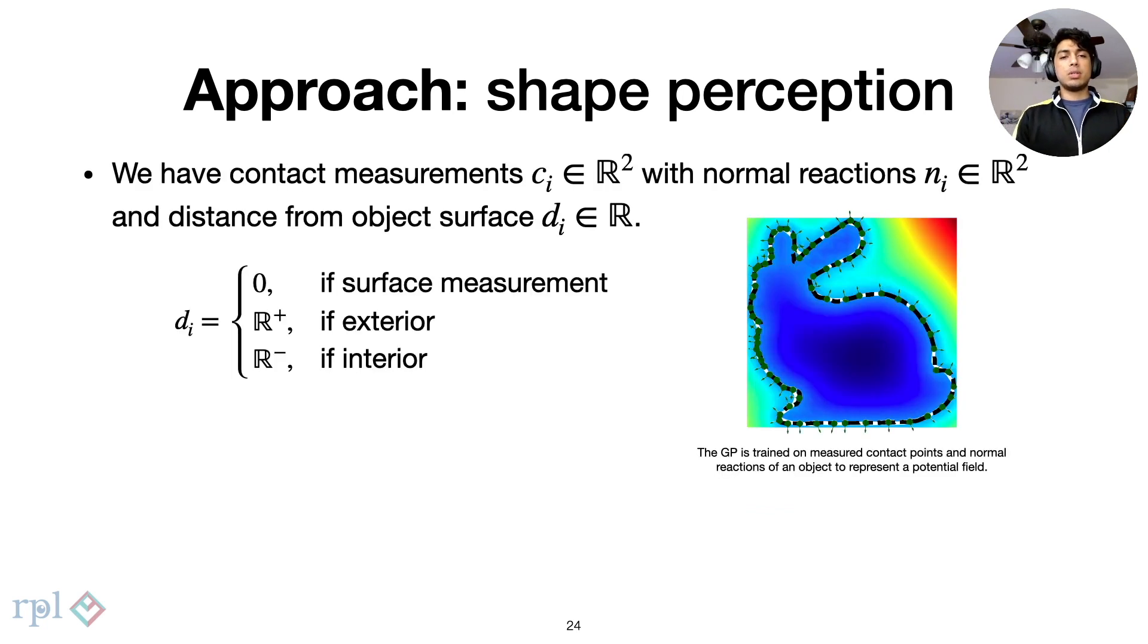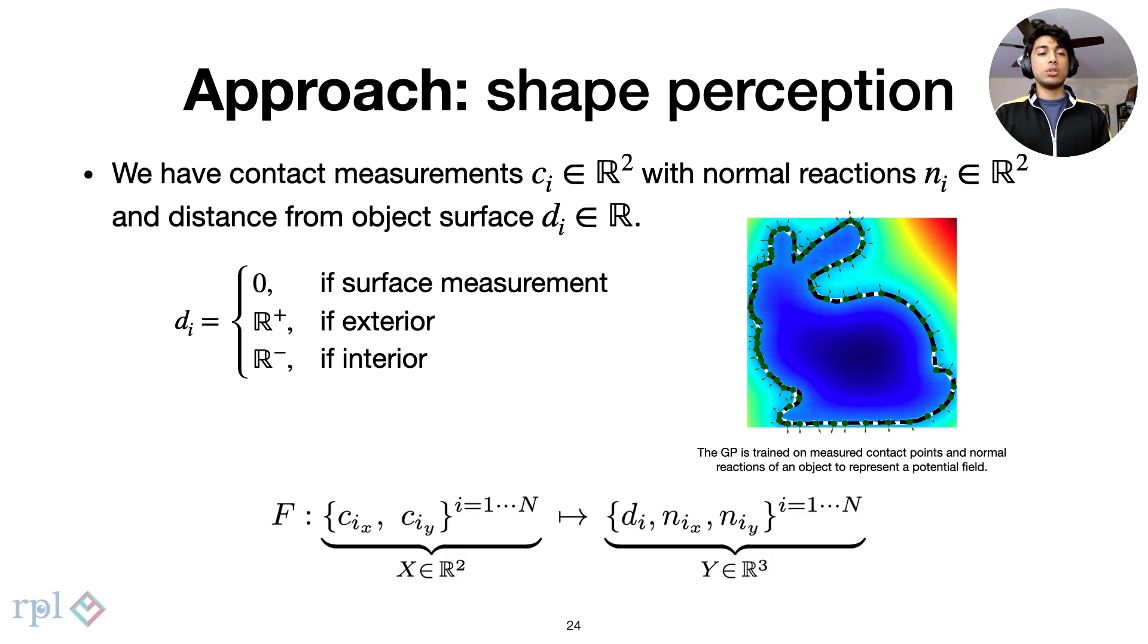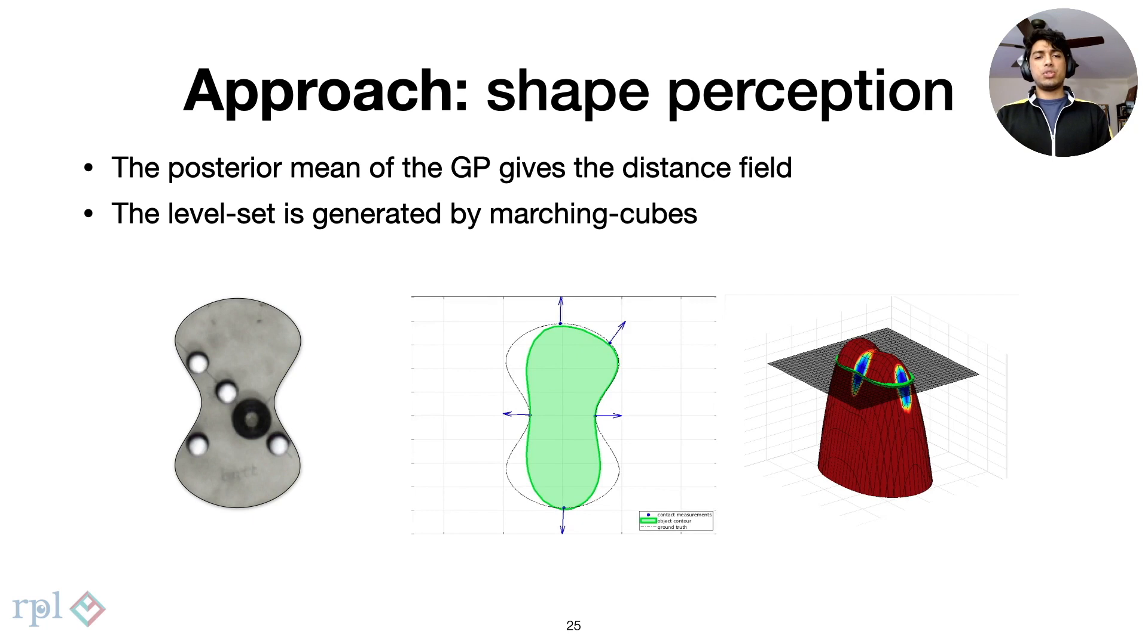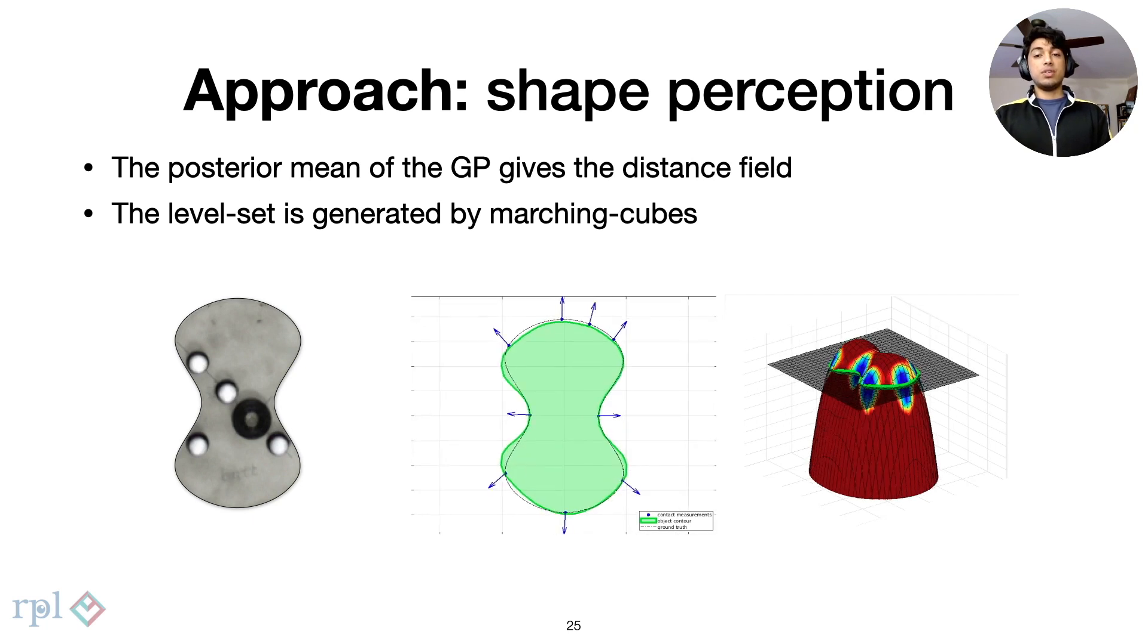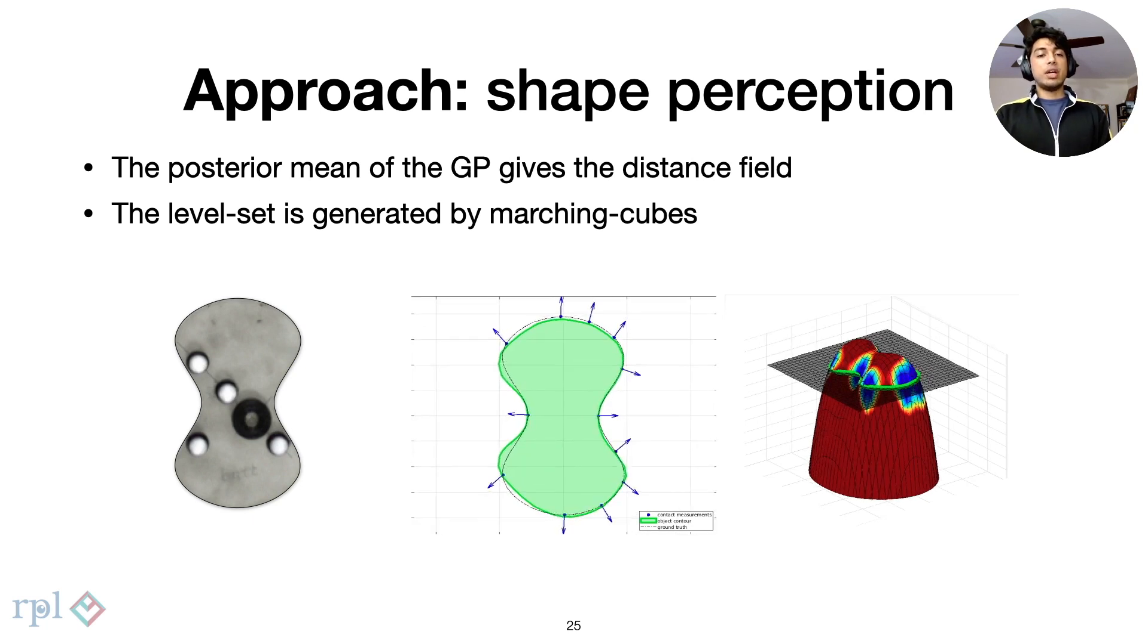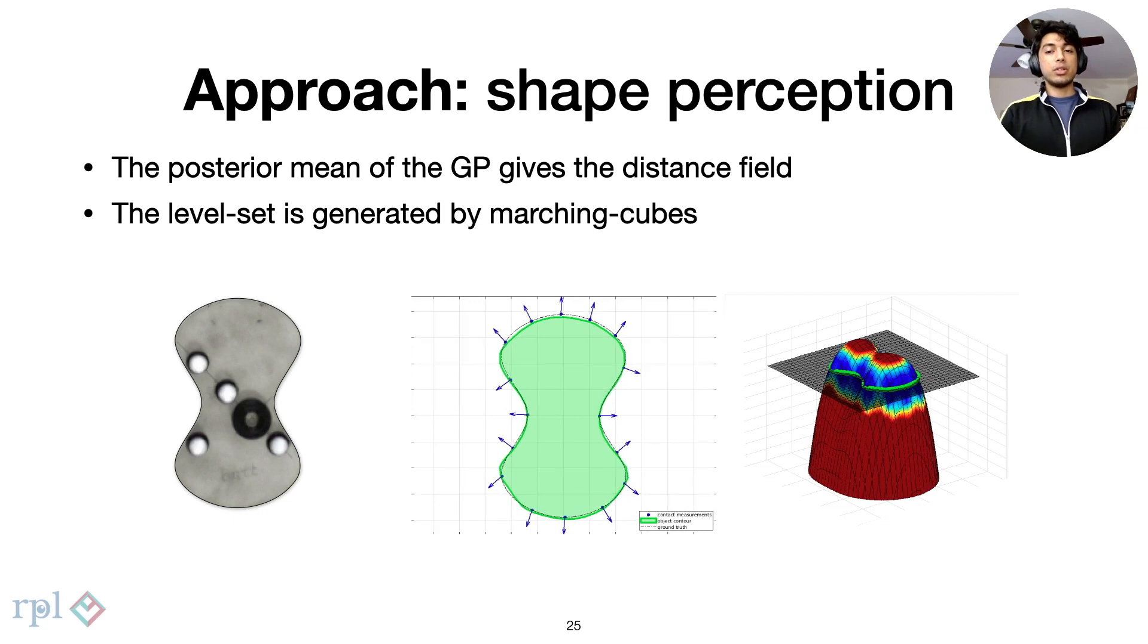Given the object's current pose and the accumulation of sensed contact and normal reactions, we construct an approximate signed distance function. While the contact points condition the GP on zero SDF observations, the normals provide valuable function gradient observations. The standard GP posterior equations give us the distance field and we can generate the isocontour with a marching cubes algorithm.